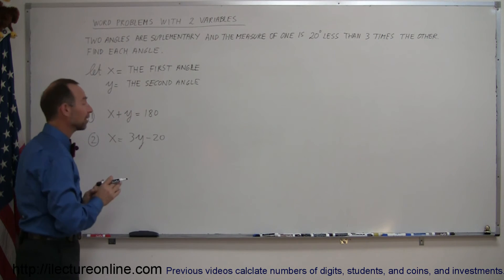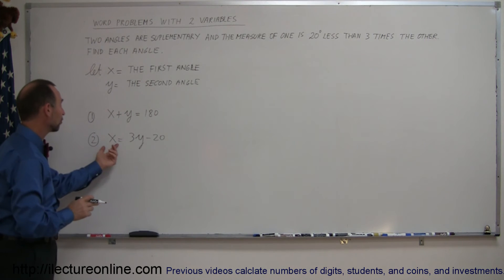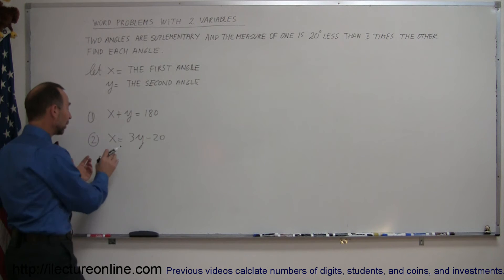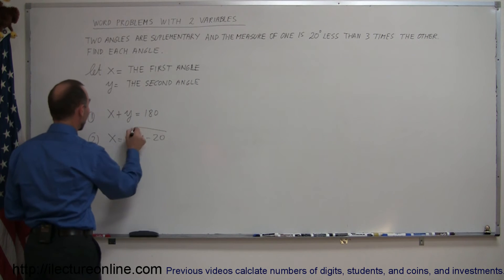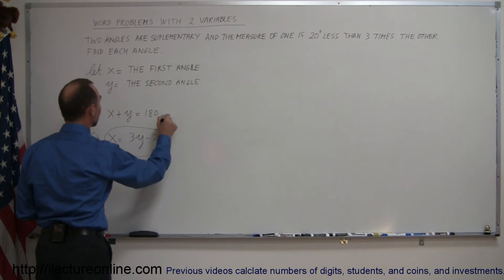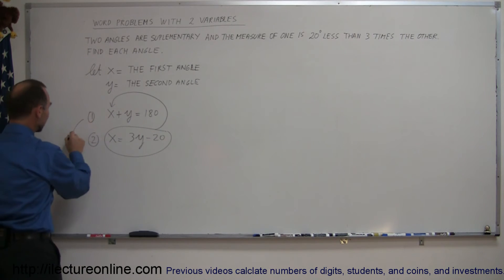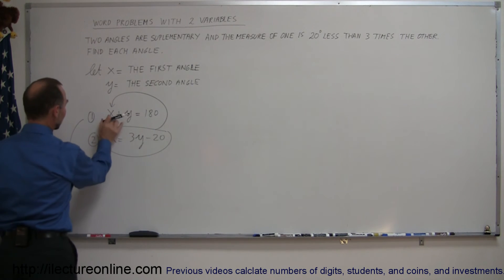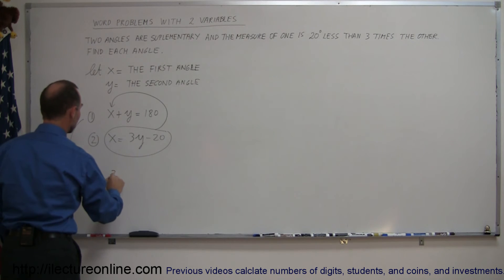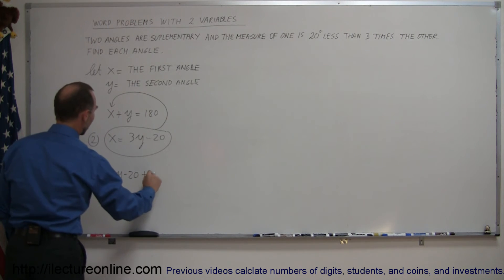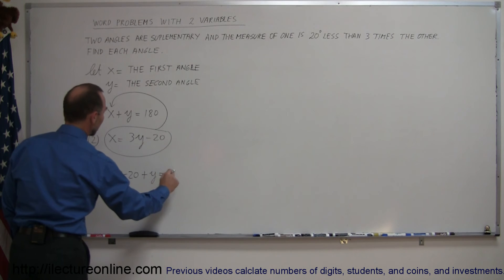Now, I can solve those two equations simultaneously. And since I have one equation already in terms of the other, I mean one variable in terms of the other variable, I can take this and substitute that in for x on the other equation. When I do that, my first equation becomes, instead of x, I write 3y minus 20 plus y equals 180.